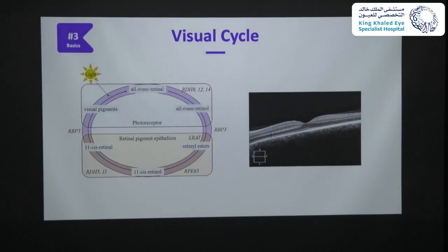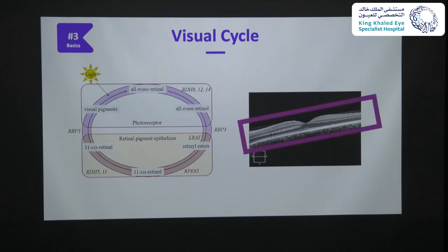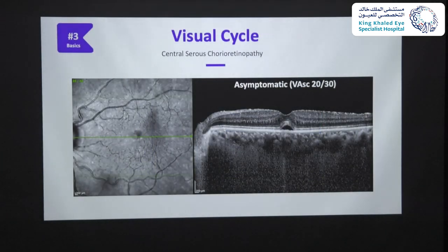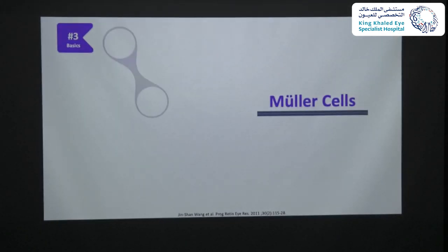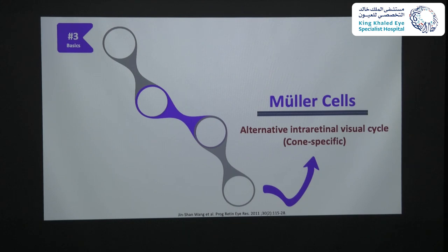The last point in basics regards the visual cycle, where the photosensitive active retinoid 11-cis retinal is reproduced in the retinal pigment epithelium and subsequently delivered into the photoreceptors. This works perfectly when the retina is attached. But when there is photoreceptor detachment from the RPE, like in a patient presenting with acute central serous chorioretinopathy, the visual cycle could be interrupted. Yet VA can be quite good. One possible reason is that Müller cells may provide cones with an alternative intra-retinal visual cycle.